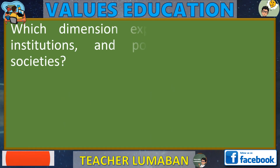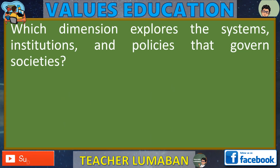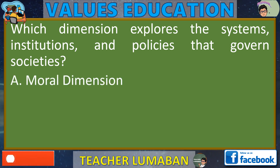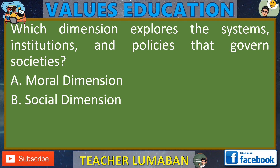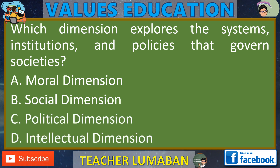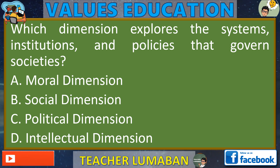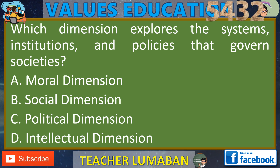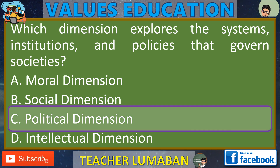Which dimension explores the systems, institutions, and policies that govern societies? Letter A: Moral Dimension. Letter B: Social Dimension. Letter C: Political Dimension. Letter D: Intellectual Dimension. In the next 5 seconds, select the best response from the available options. The correct answer is C, Political Dimension. Ang tamang sagot ay C, Political Dimension.